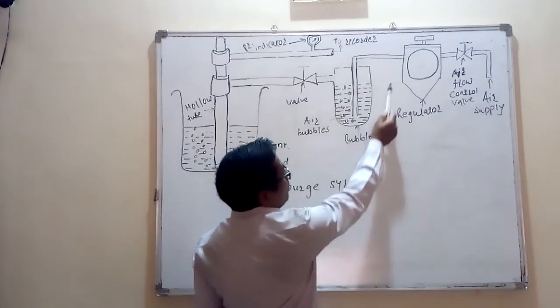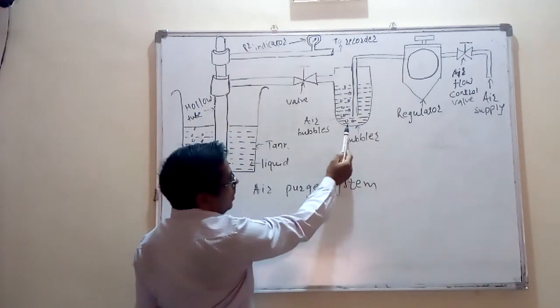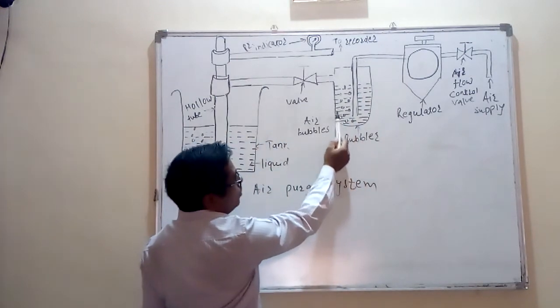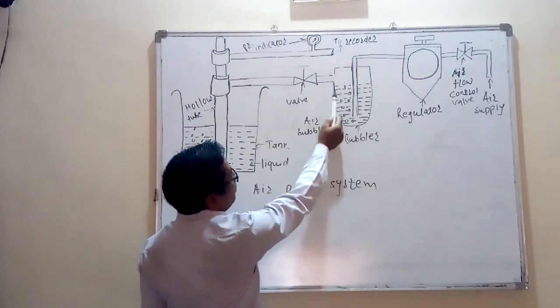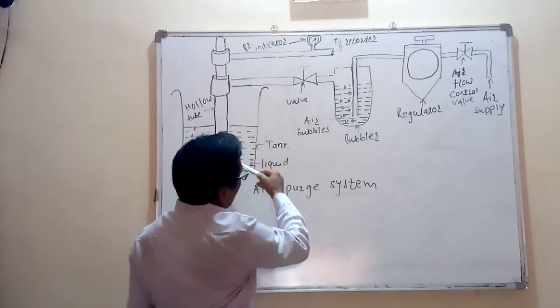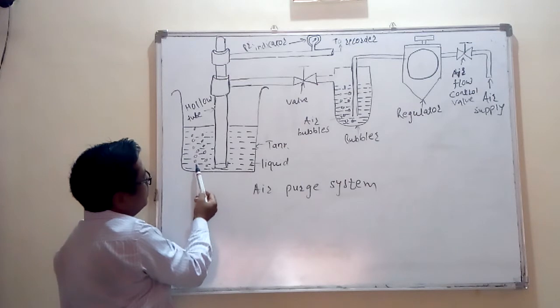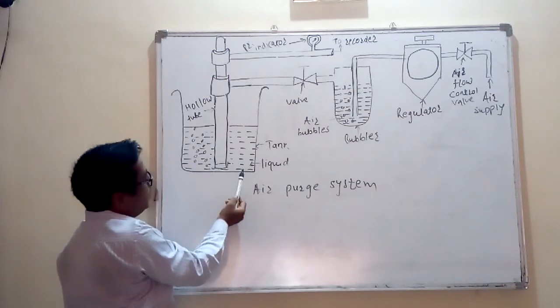This is known as a bubbler. Through this tube, the air is coming through this chamber. Through this chamber, it is passing through this valve to the liquid tank. This is the liquid tank in which there is a liquid which level we have to measure.